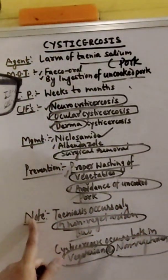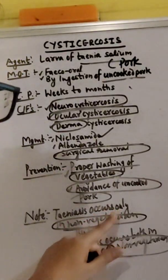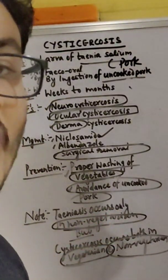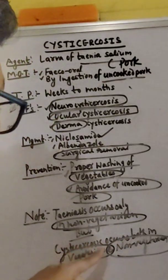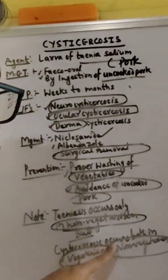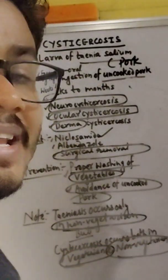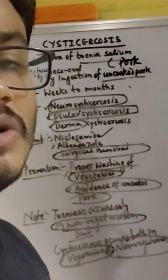Note: Taeniasis occurs only in non-vegetarians. But cysticercosis can occur in both vegetarians as well as non-vegetarians.